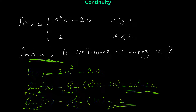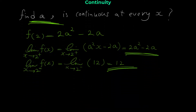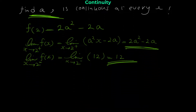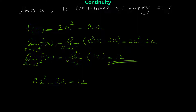To find a value of a that makes the function continuous, we set the right limit and left limit equal to each other. Moving 12 to the left gives: 2a² - 2a - 12 = 0.